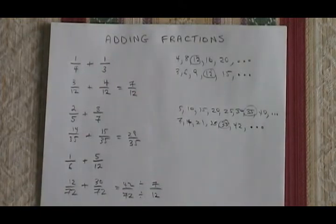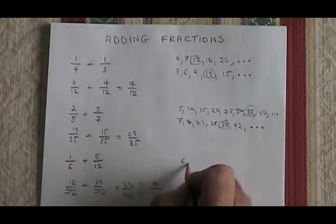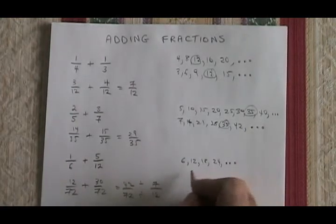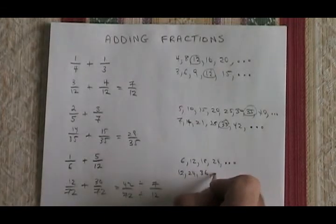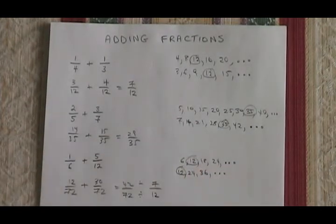But what if I had listed the multiples? I would have seen that the multiples of 6 are 6, 12, 18, 24, and it keeps going. Multiples of 12 are 12, 24, 36, and it keeps going. The lowest number that's in both lists is 12, not 72.